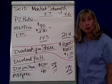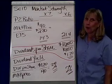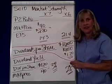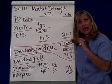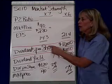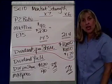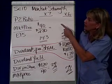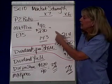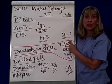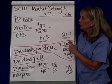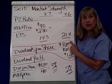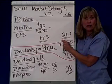The first one is called the price-earnings ratio, or PE ratio for short. It's the market price of the stock on the last day of the year on the close, divided by the earnings per share on the stock. In short exercise 10, it tells me that the market price on the last day of the year is $40, and that the earnings per share on the income statement is $2.80.